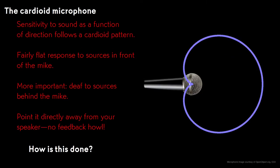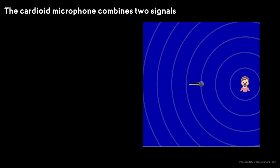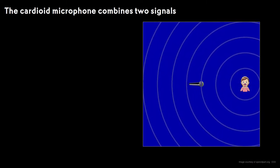One thing that's motivating this video is that a musician I know, who's not much into physics, asked me, so does this have anything to do with the cardioid microphone? The answer is yes. The microphone's sensitivity to sound as a function of the direction from the mic follows a cardioid pattern. That gives it a fairly flat response to sources in front of it. You can move a little off-axis and hardly affect the sound at all, but more important, the mic is deaf to sources directly behind it. Point the mic directly away from your monitor speaker, and there's no feedback howl. And it turns out that the way it's done relates directly to the formula for the cardioid in polar coordinates.